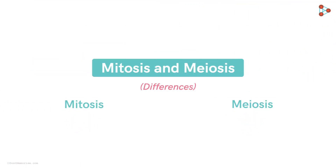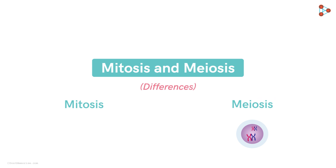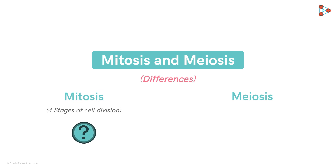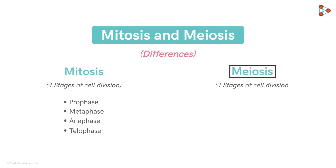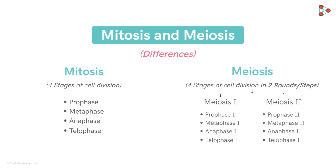Now let's look at the differences. In meiosis, the cell has a more complex task to perform — complex for the cell, not for us. Mitosis involves four stages: prophase, metaphase, anaphase, and telophase. On similar lines, meiosis also has four stages for cell division, but the key difference is that meiosis is carried out in two rounds — meiosis one and meiosis two — as two major phases.